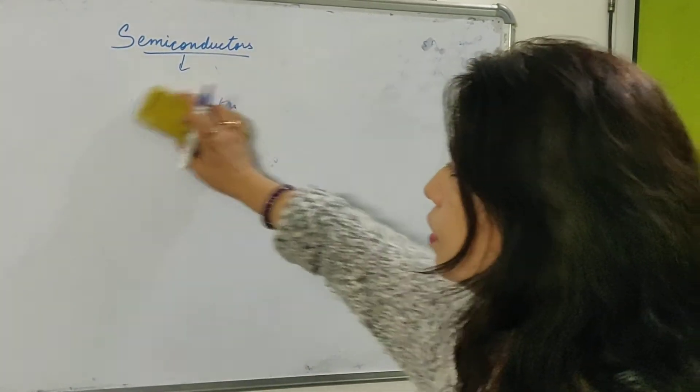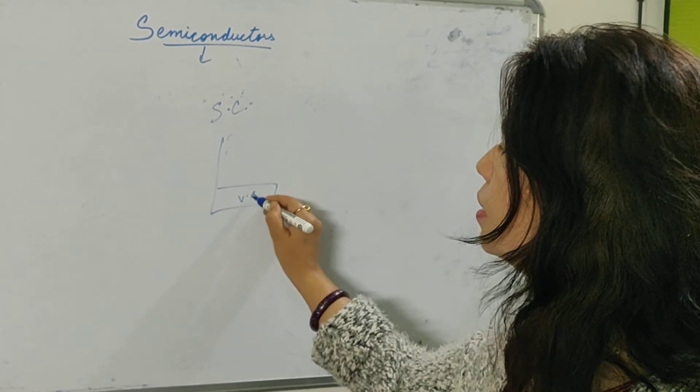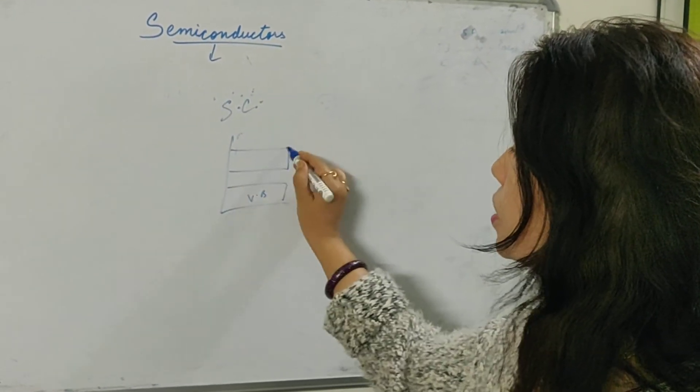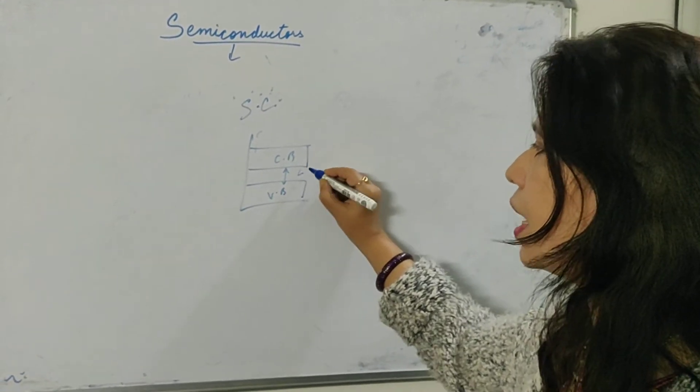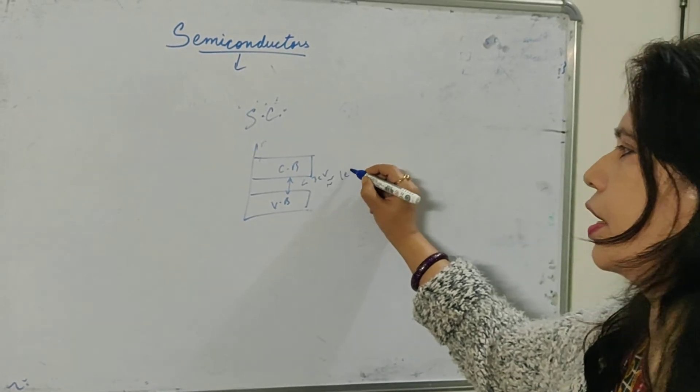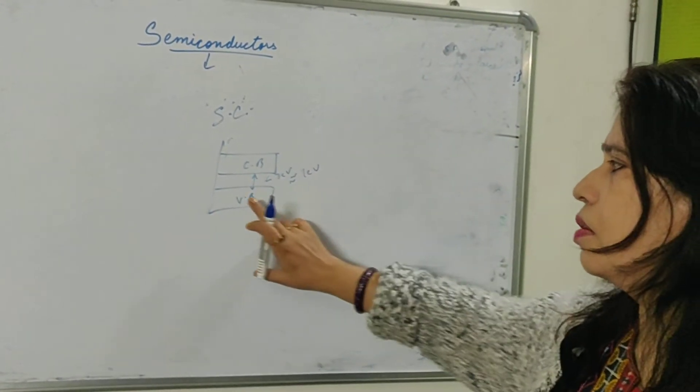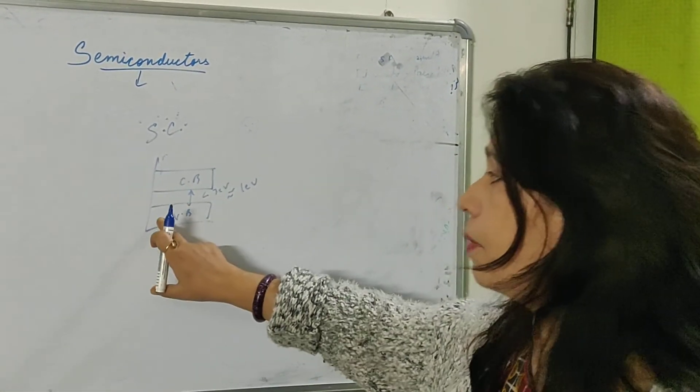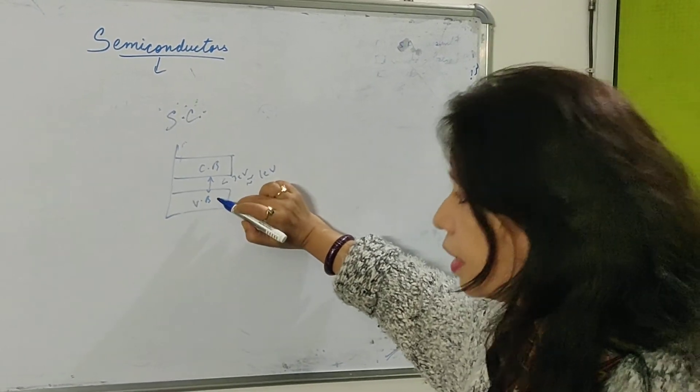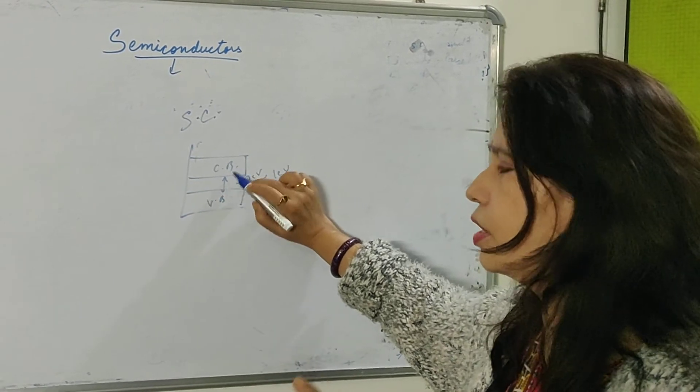Now, talking about your semiconductors. In semiconductors, this is your valence band and this is your conduction band. This gap is small. It is less than 3 electron volts, almost equal to 1 electron volt. So, at 0 Kelvin, of course, the conduction band is empty and valence band is filled. At room temperature, what will happen? Even the electrons can gain energy and jump to the conduction band. So, both are partially filled over here.